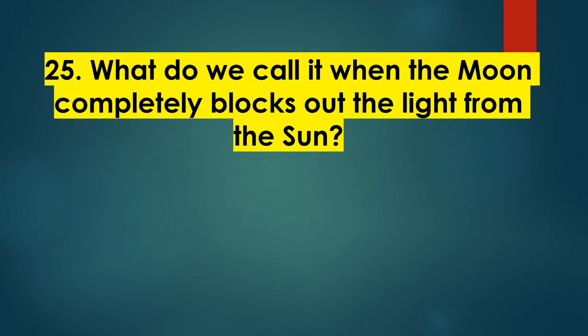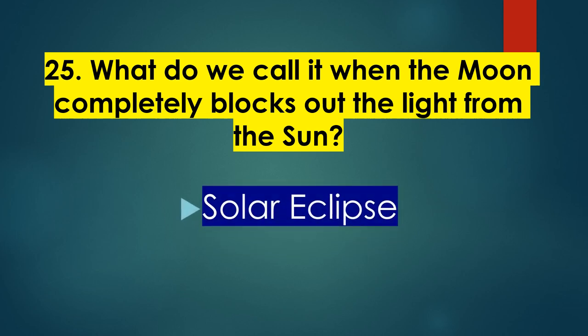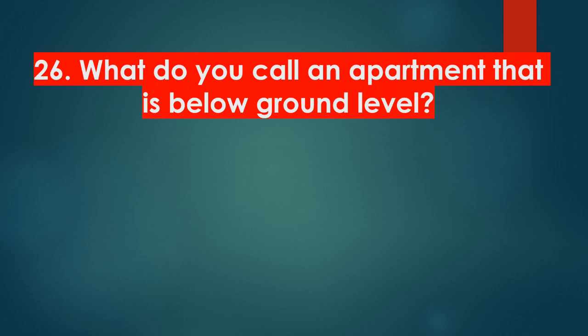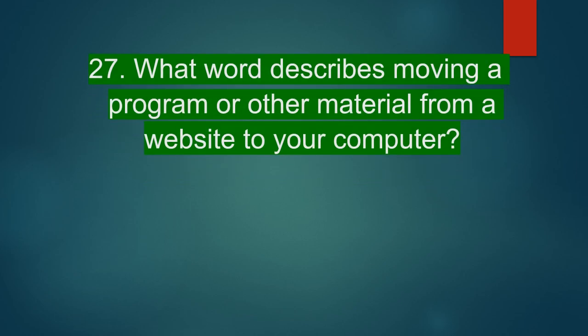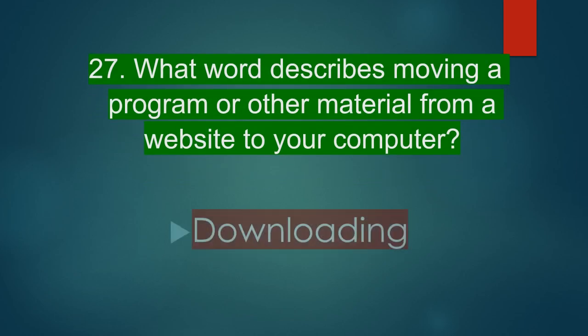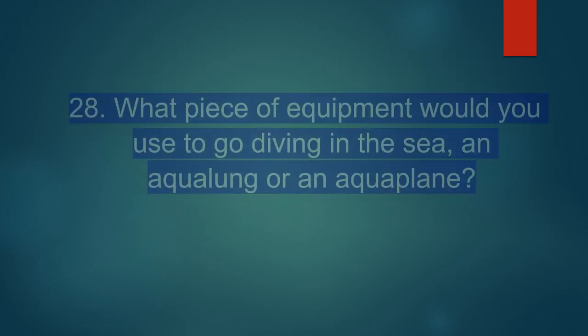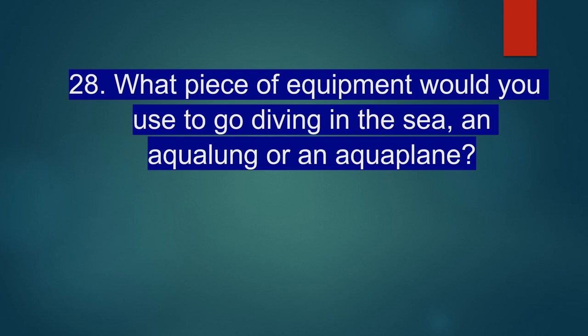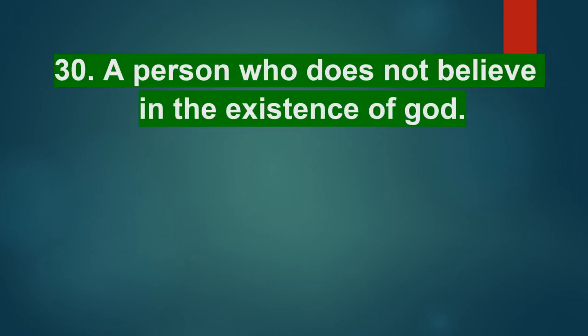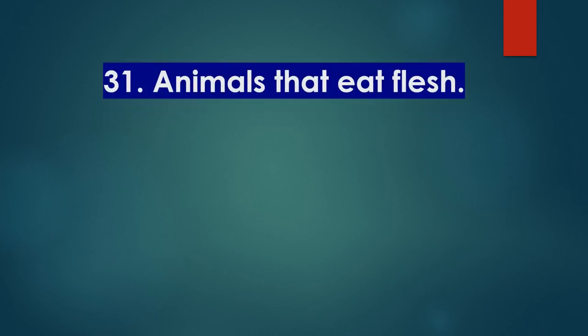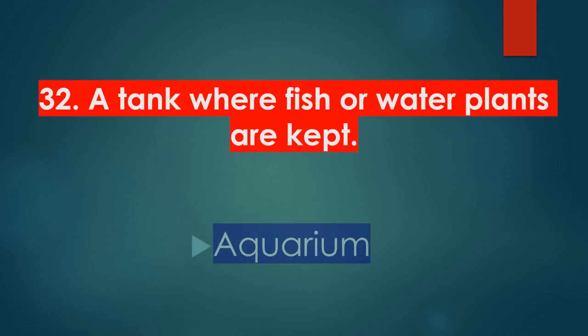What do we call it when the moon completely blocks out the sun? Solar eclipse. What do we call an apartment that is below ground level? Basement. What word describes moving a program or other material from a website to your computer? Downloading. What piece of equipment would you use to go diving in the sea — an aqualung or an aquaplane? Aqualung. A disease or accident which ends in death? Fatal. A person who does not believe in the existence of God? Atheist. Animals that eat flesh? Carnivorous. A tank where fish or water plants are kept? Aquarium.